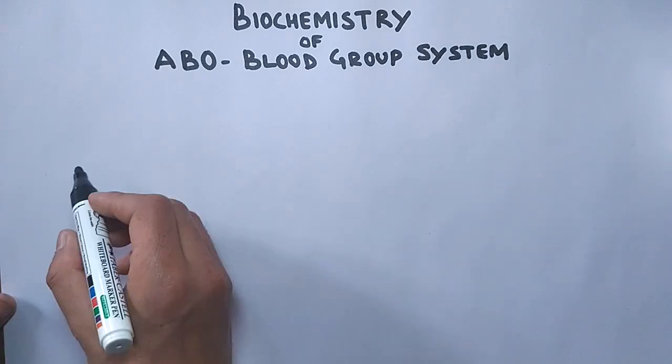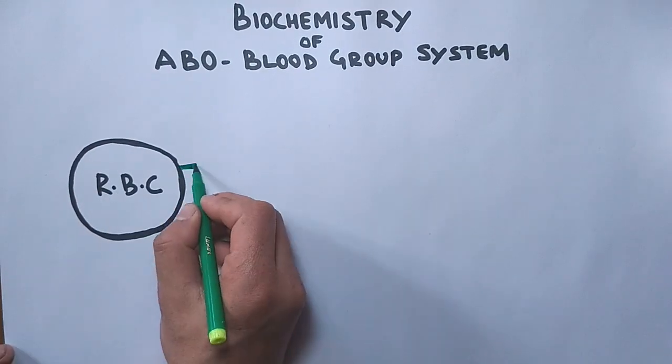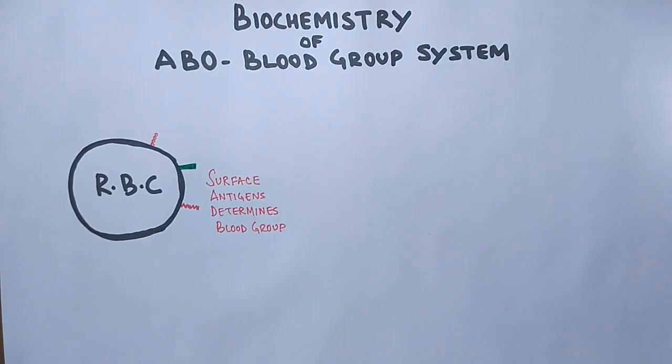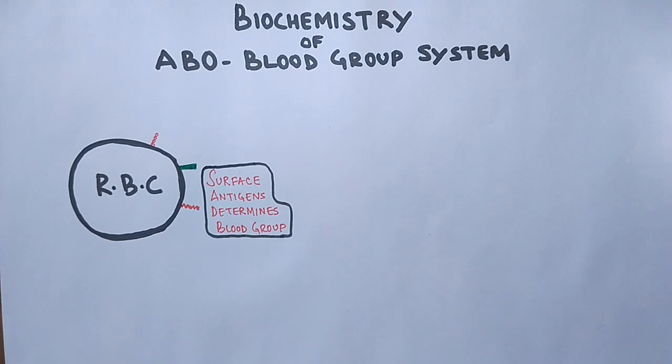When we talk about the blood group of an individual it is determined by the surface proteins on erythrocytes. It is actually what kind of antigen is present on the surface of erythrocytes.